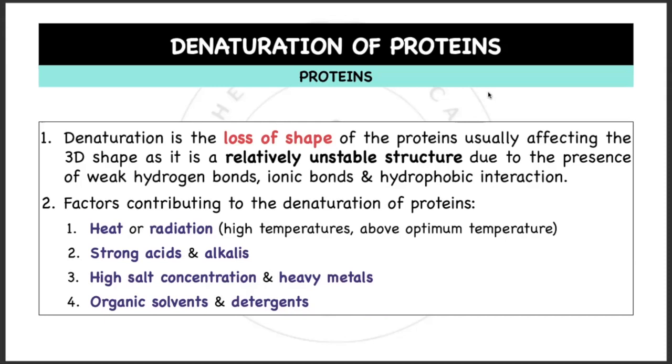Denaturation is the loss of shape of the proteins, usually affecting the 3D shape as it is a relatively unstable structure due to the presence of weak hydrogen bonds, ionic bonds, and hydrophobic interactions. These weak bonds control the shape and can be easily broken.